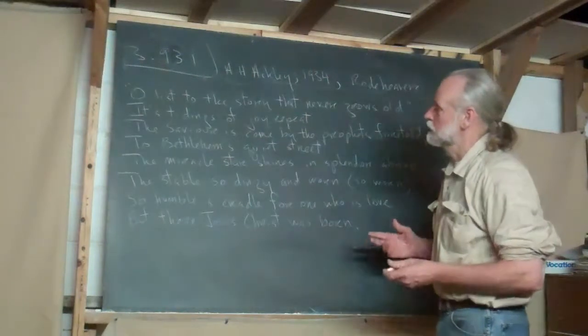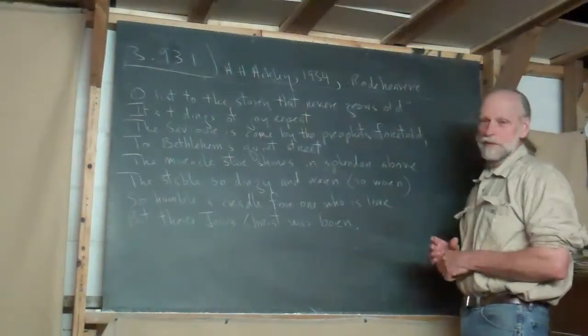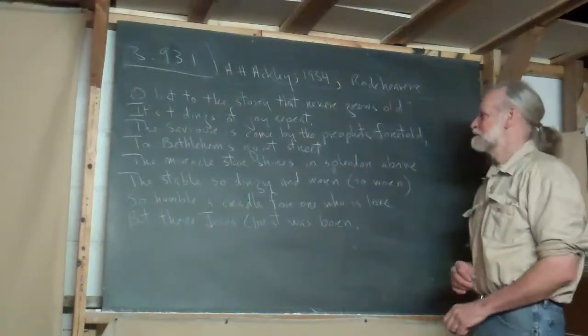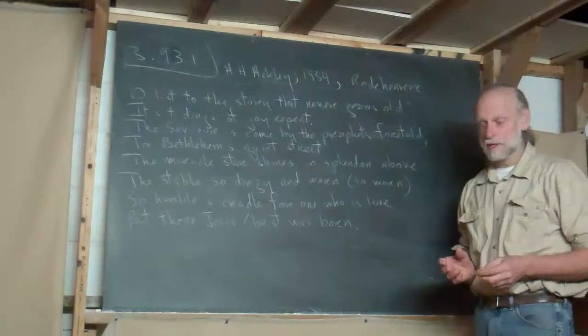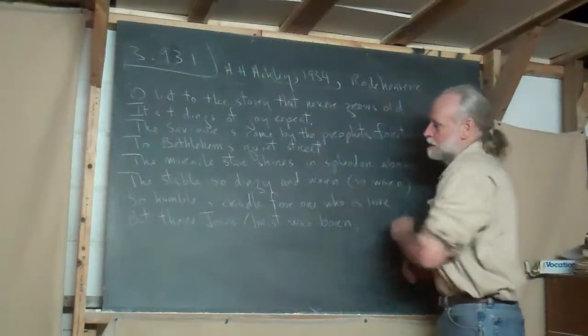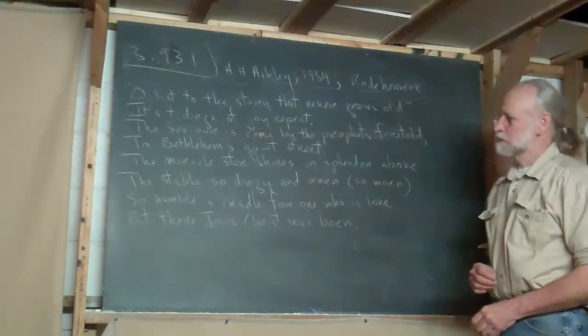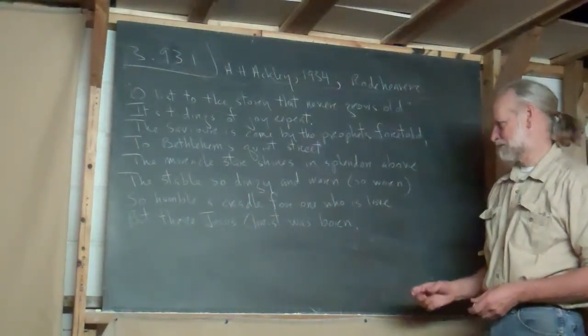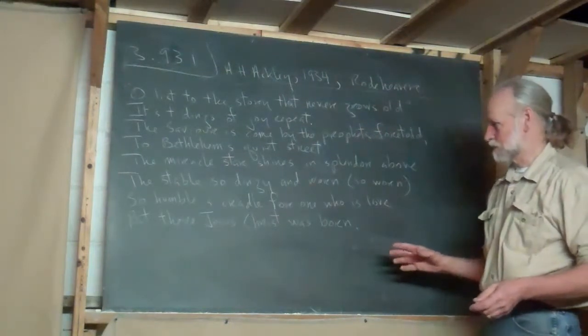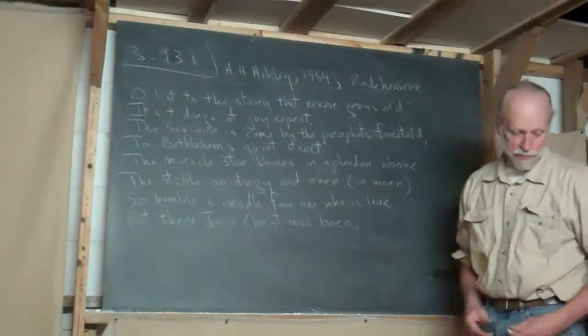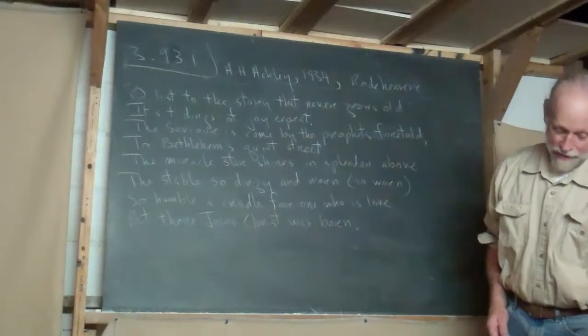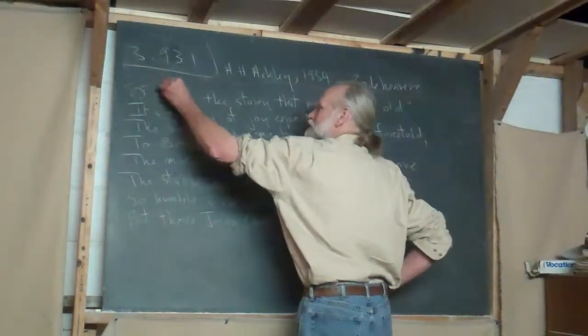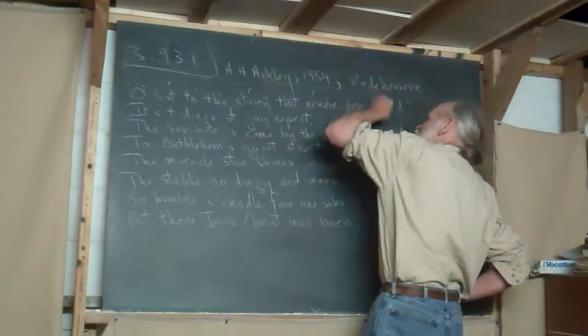But anyway, before I do that, let's look at the poem. Oh, listen to the story that never grows old. Its tidings of joy repeat. The Savior is come by the prophets foretold to Bethlehem's quiet street. The miracle star shines in splendor above the stable, so dingy and worn, so worn, so humble a cradle for one who is love. But there, Jesus Christ was born. Very simple. Which is one of the reasons I like it. But it's also in triple time.